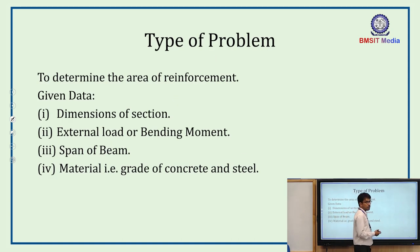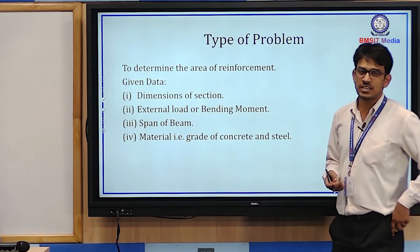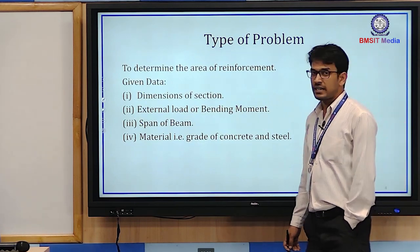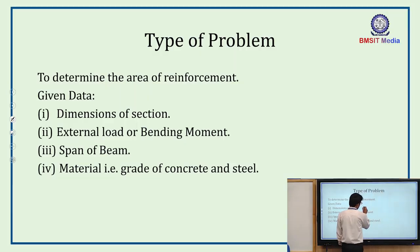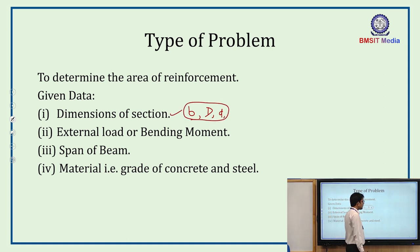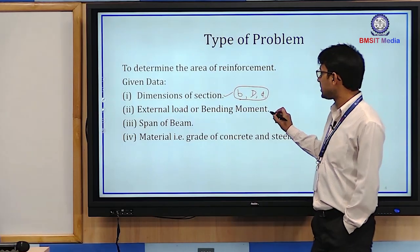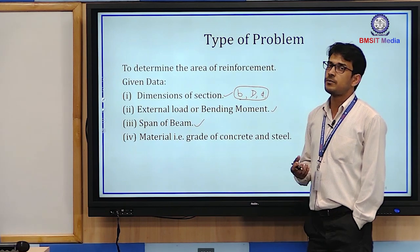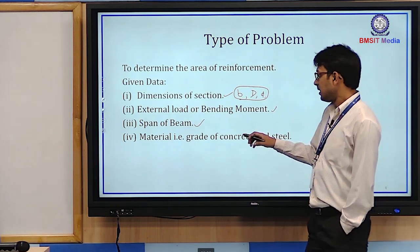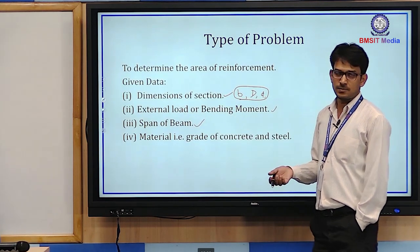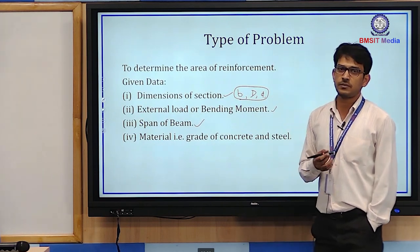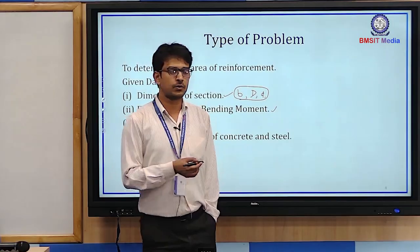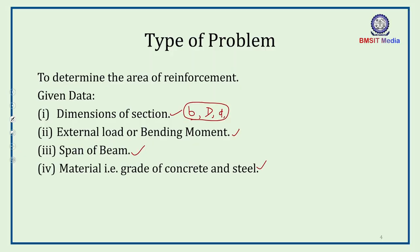For a typical design problem, the given data includes: the dimensions of the section (width b and depth D), the external load or bending moment, and the material grades — which grade of concrete and which grade of steel. On the basis of the given load, we calculate the ultimate bending moment coming on that beam. If only the bending moment is given, we don't need the span.